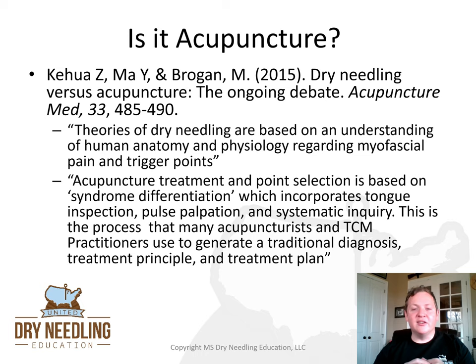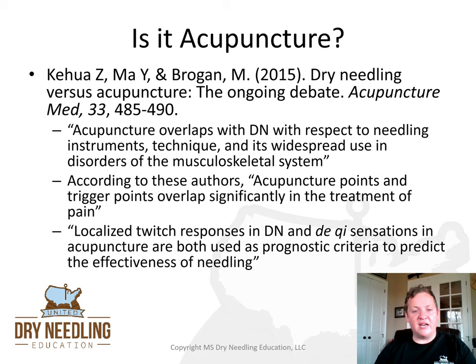Theories of dry needling are based on an understanding of human anatomy and physiology regarding myofascial pain and trigger points. Acupuncture treatment and point selection is based on syndrome differentiation, incorporating tongue inspection, pulse palpation, and systematic inquiry — a process used to generate a traditional diagnosis, treatment principle, and treatment plan. According to these authors, acupuncture overlaps with dry needling in needling instruments, technique, and widespread use for musculoskeletal disorders, and acupuncture points and trigger points overlap significantly in the treatment of pain.